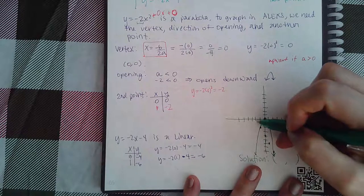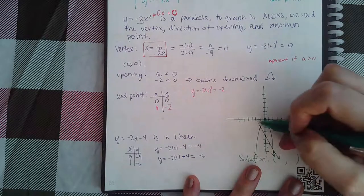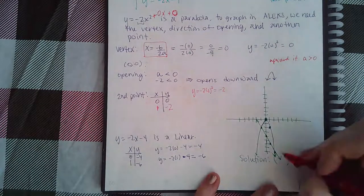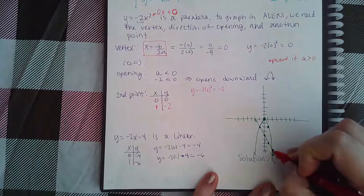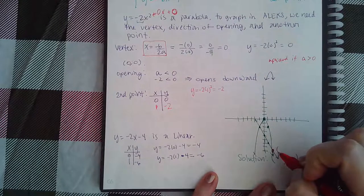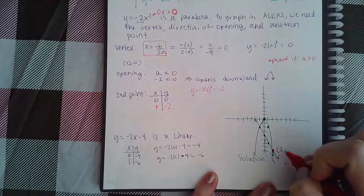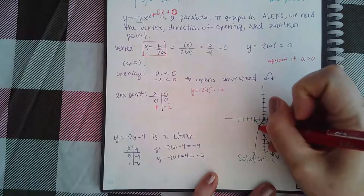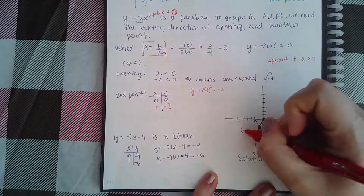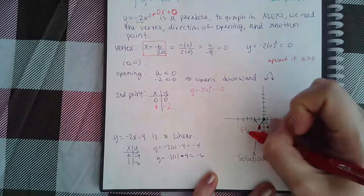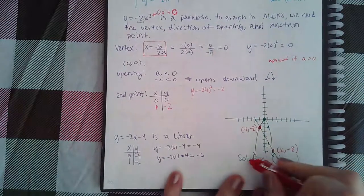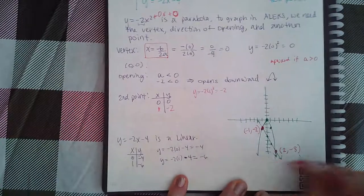Now notice that there's actually two solutions here. There's one solution here, which is at the coordinates (2, -8), and then you have another solution over here, which is at the coordinates (-1, -2). Okay, so you actually have two solutions there.